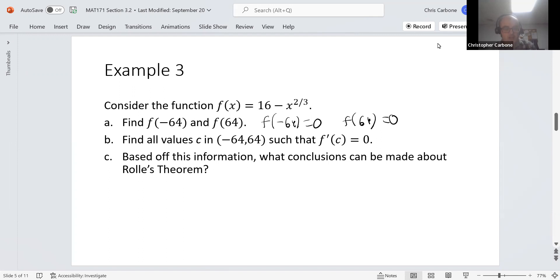So those two are the same. We want to find all values c in the open interval negative sixty-four to positive sixty-four such that f prime of c is equal to zero. f prime of x is negative two-thirds times x to the negative one-third power. The only time that's equal to zero is, well, if we have the value of x is equal to zero.